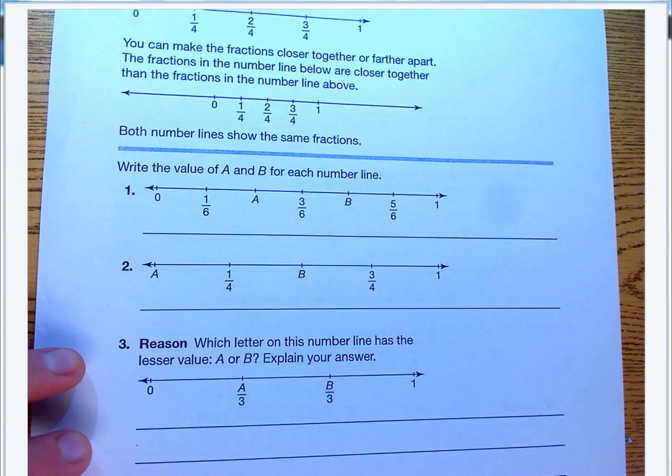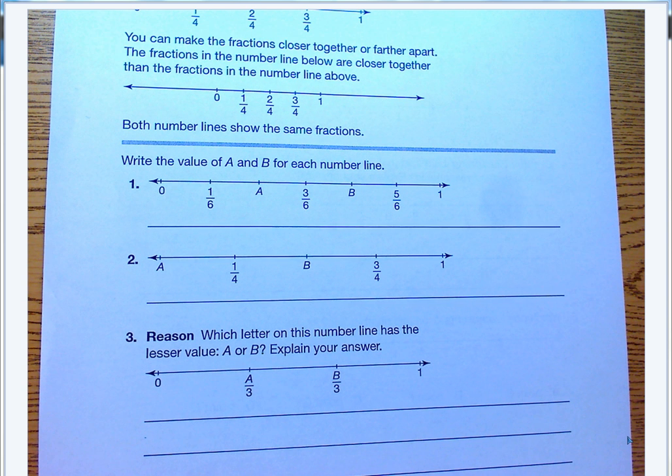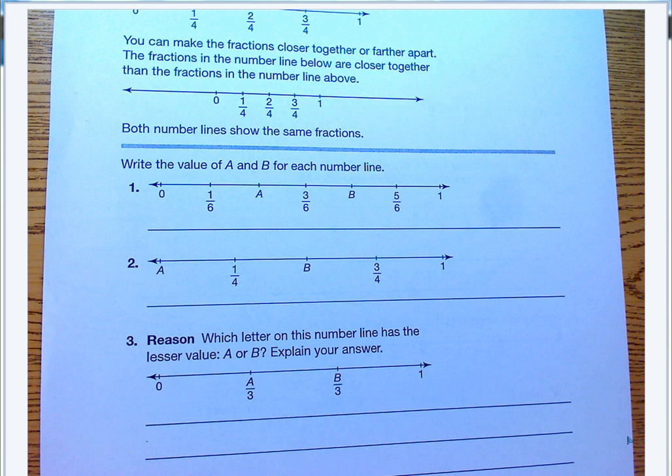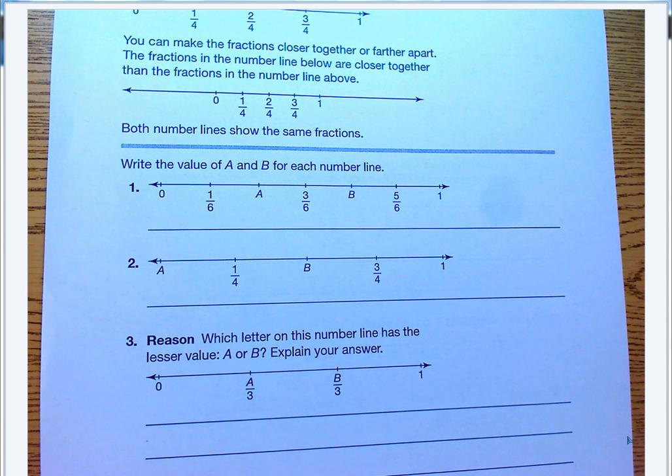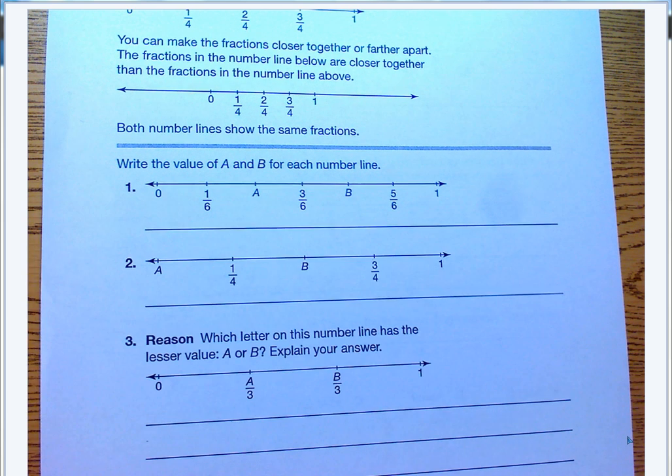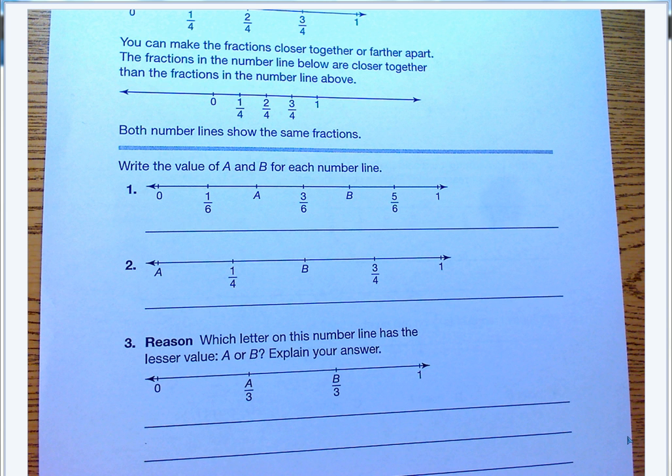We're going to take a look at number one. Number one says write the value of A and B for each number line. So we're going to take a look. What is number one split into? How many equal parts does number one have? Six. Yes, we do have six equal parts on the number line. If I have zero to one, notice that it is zero to one, there's only one whole, and it's divided into six equal parts. If I have six equal parts, that means we divide them into sixths.